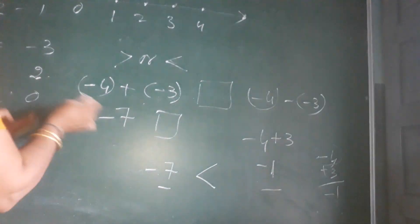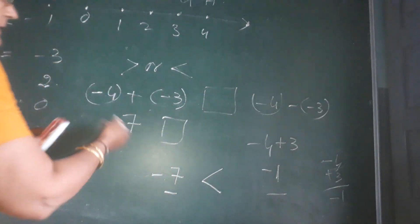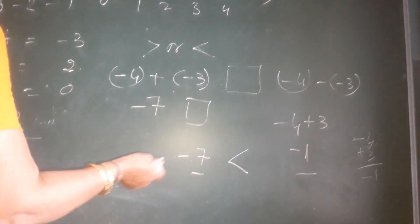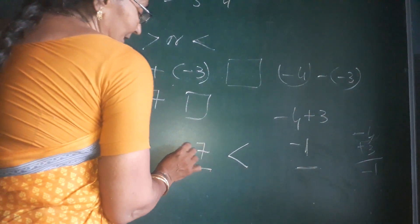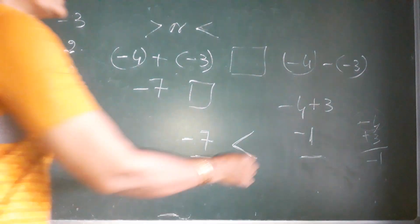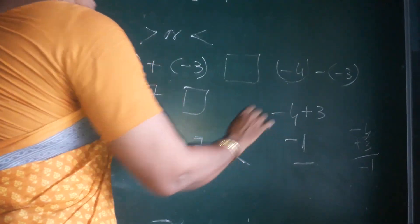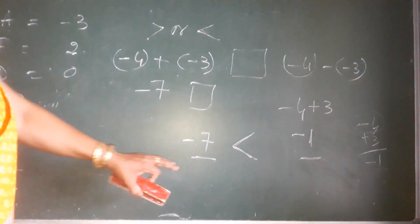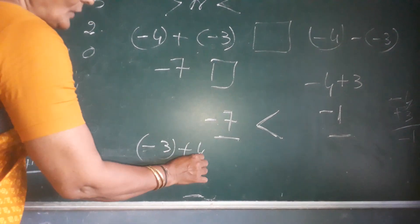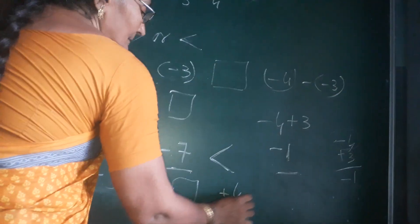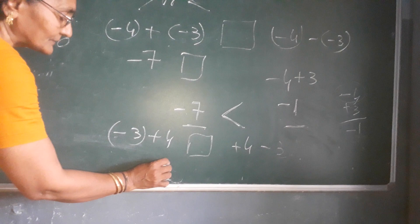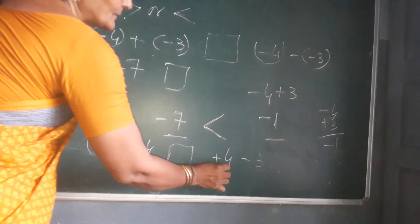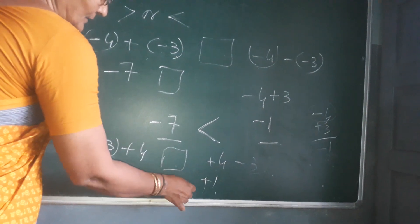I told you all negative numbers are less than positive numbers. In negative numbers, adding means going to the right and subtracting means going to the left. Another example: minus three plus four, and plus four minus three — how much is each? Minus three plus four is plus one, and plus four minus three is also plus one. So they are equal — put the equal sign.